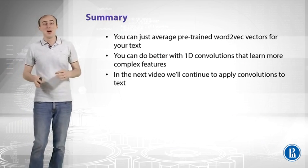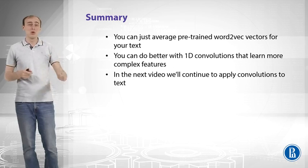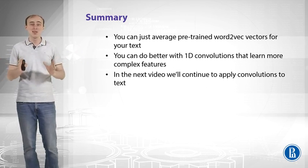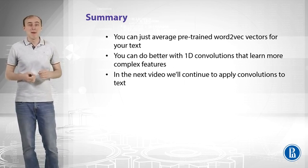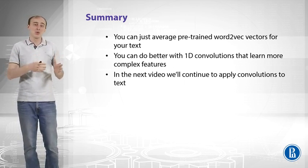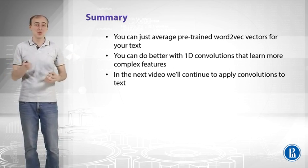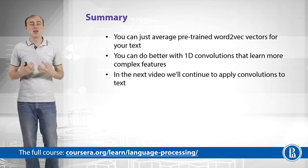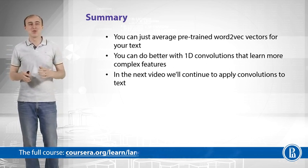To summarize: you can average pre-trained word2vec embeddings — split text into tokens, take the embedding vector for each, and sum them up — as a strong baseline. A better approach is using 1D convolutions, training the neural network end-to-end with backpropagation so the convolutions learn specific features needed to classify your sentences. In the next video we will continue applying convolutions to text.